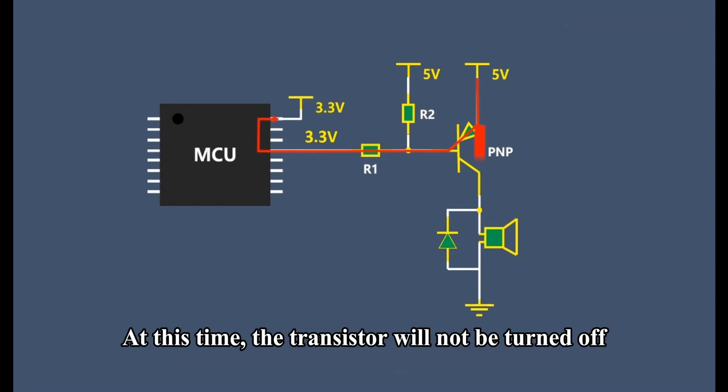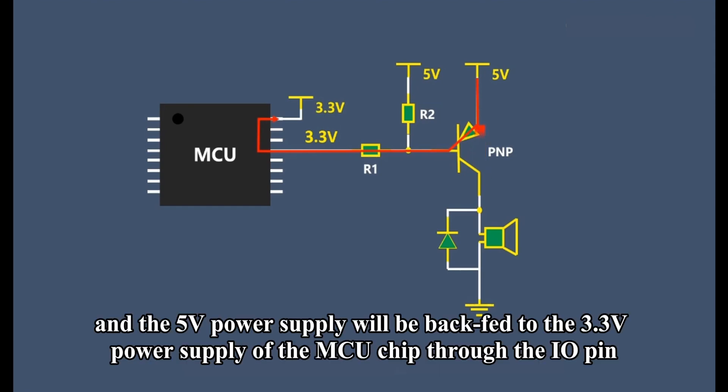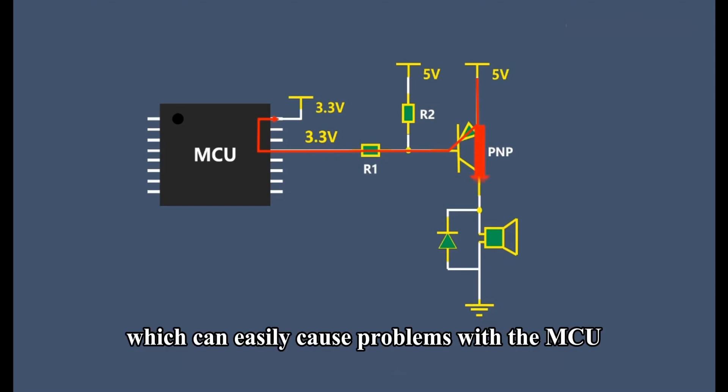At this time, the transistor will not be turned off, and the 5V power supply will be backfed to the 3.3V power supply of the MCU chip through the IO pin, which can easily cause problems with the MCU.